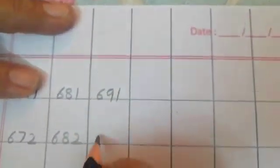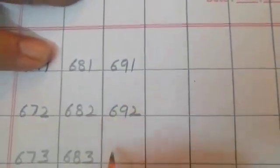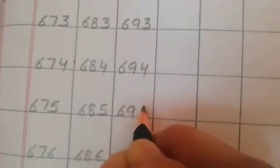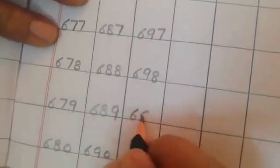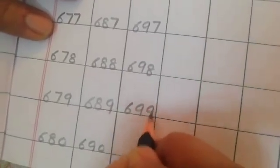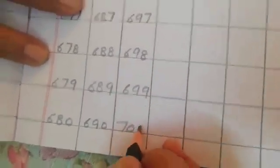691, 692, 693, 694, 695, 696, 697, 698, 699. Then what comes after 699? 700.